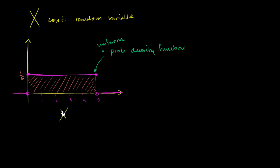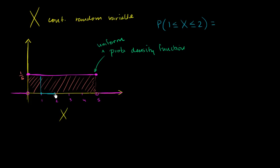Given that we've defined this probability density function, let's think about some probabilities. What is the probability that x is greater than or equal to 1 and less than or equal to 2? Well, the possible values x can take on are between 1 and 2, and the combined probability is the area under the curve in that range. The base is 1, the height is 1/5, so it's 1 times 1/5, which equals 1/5.